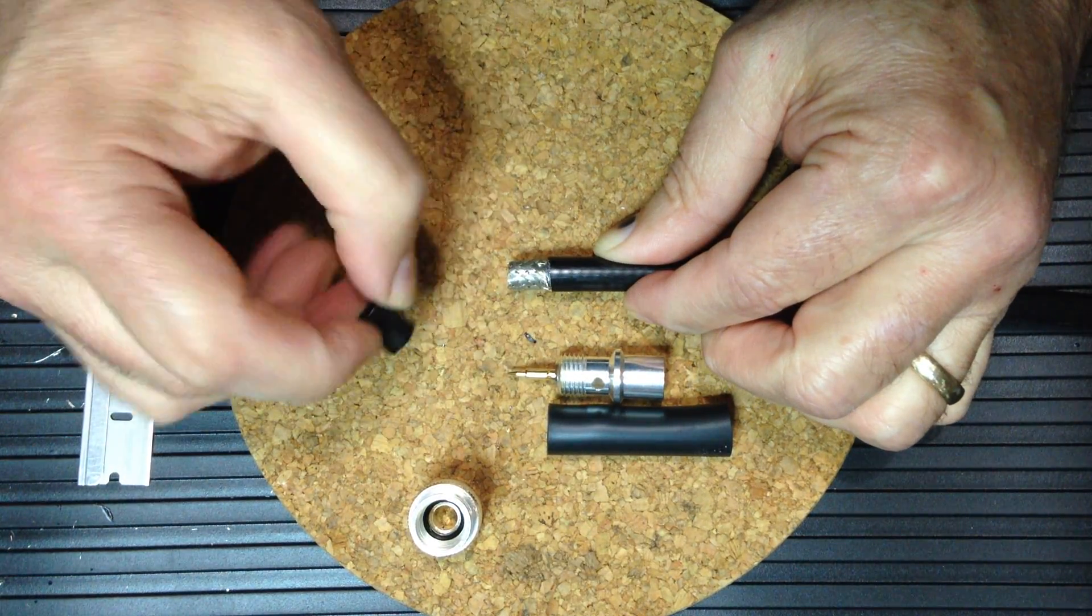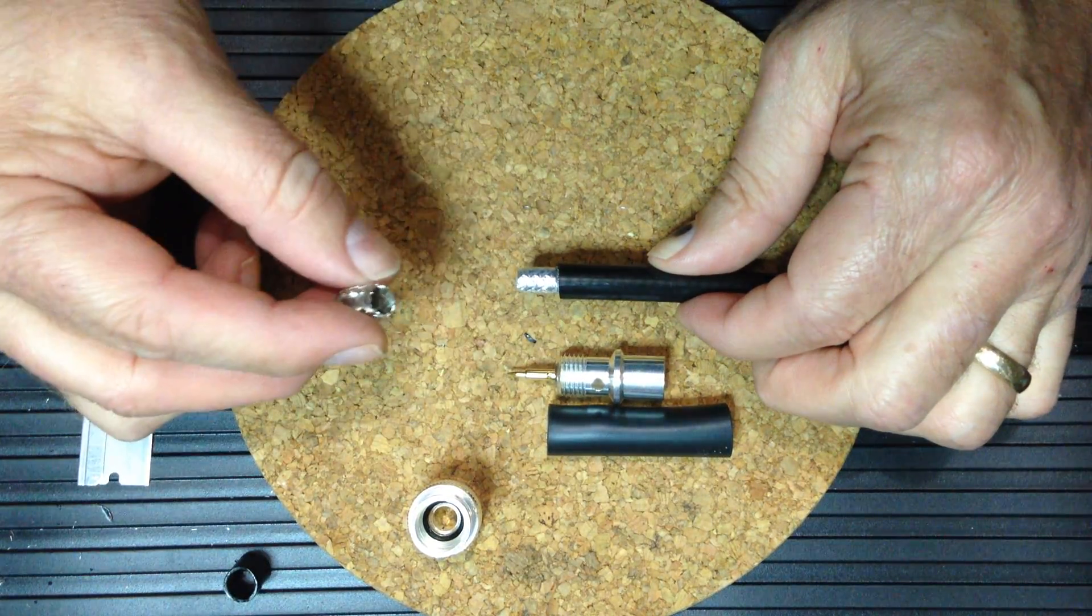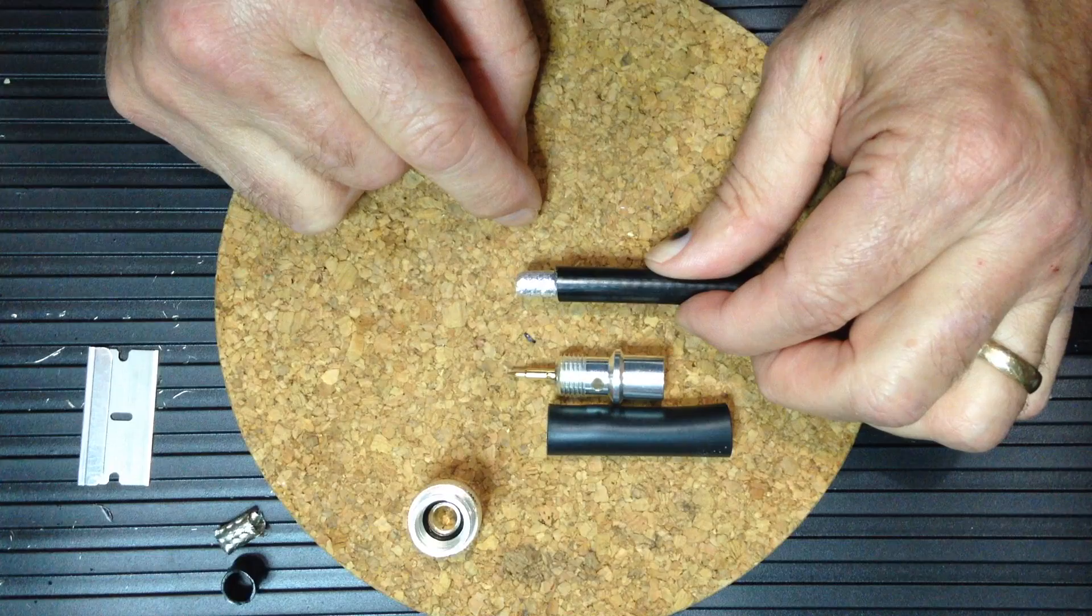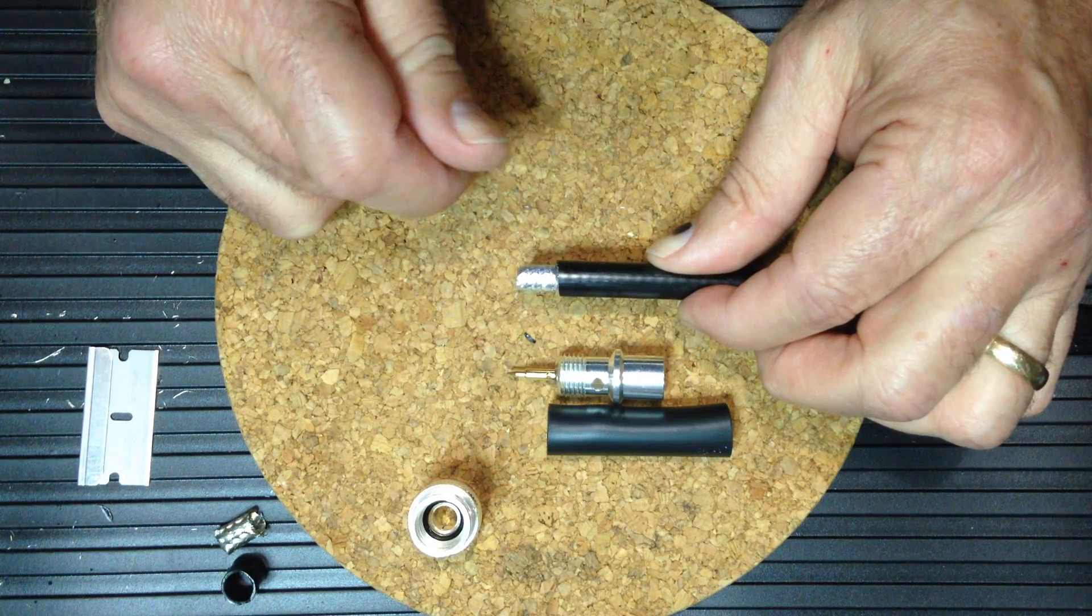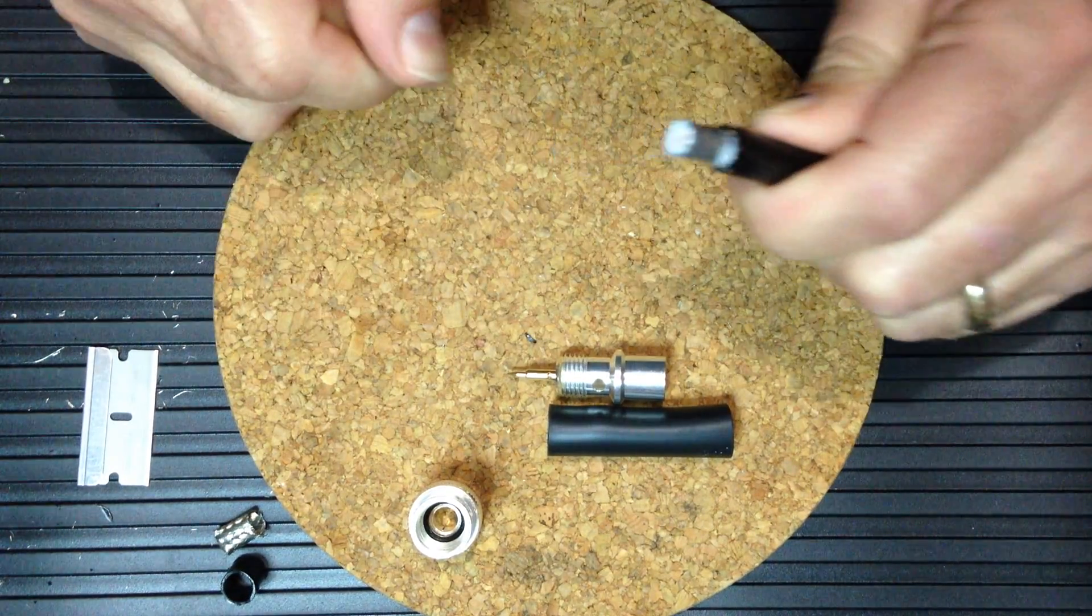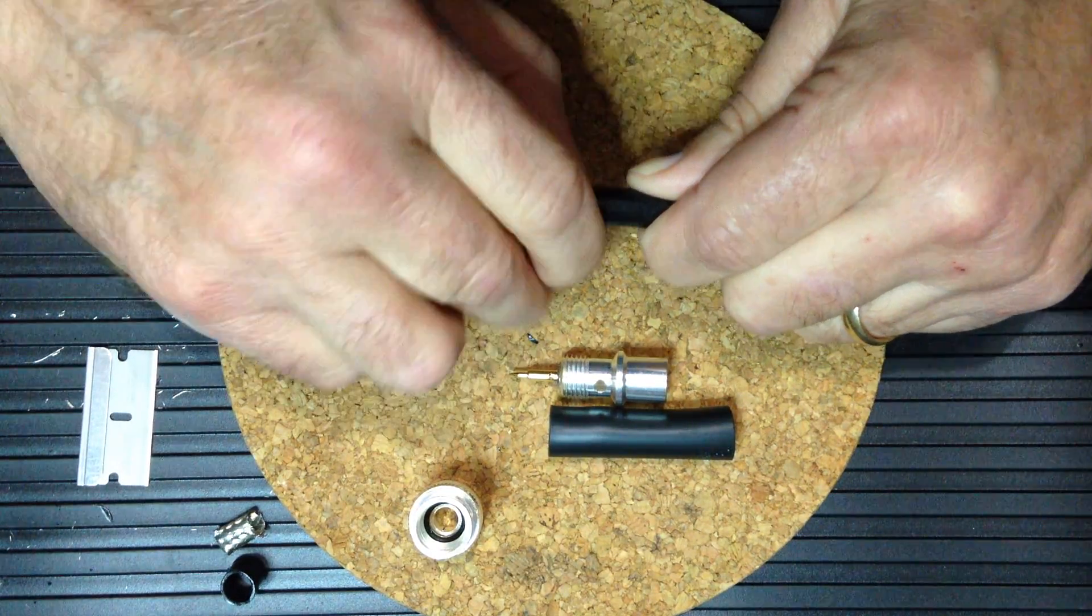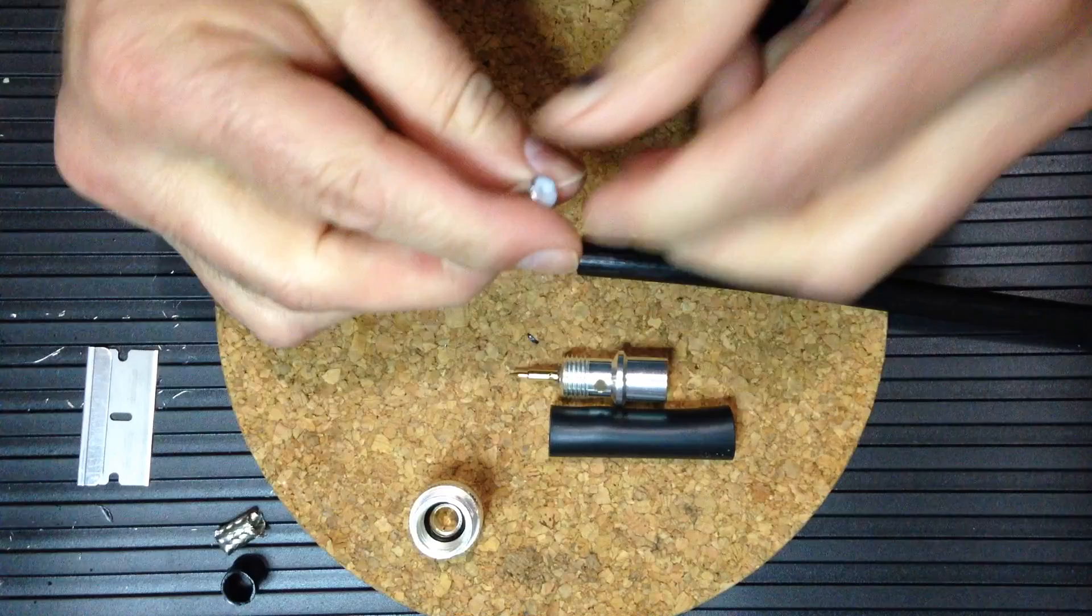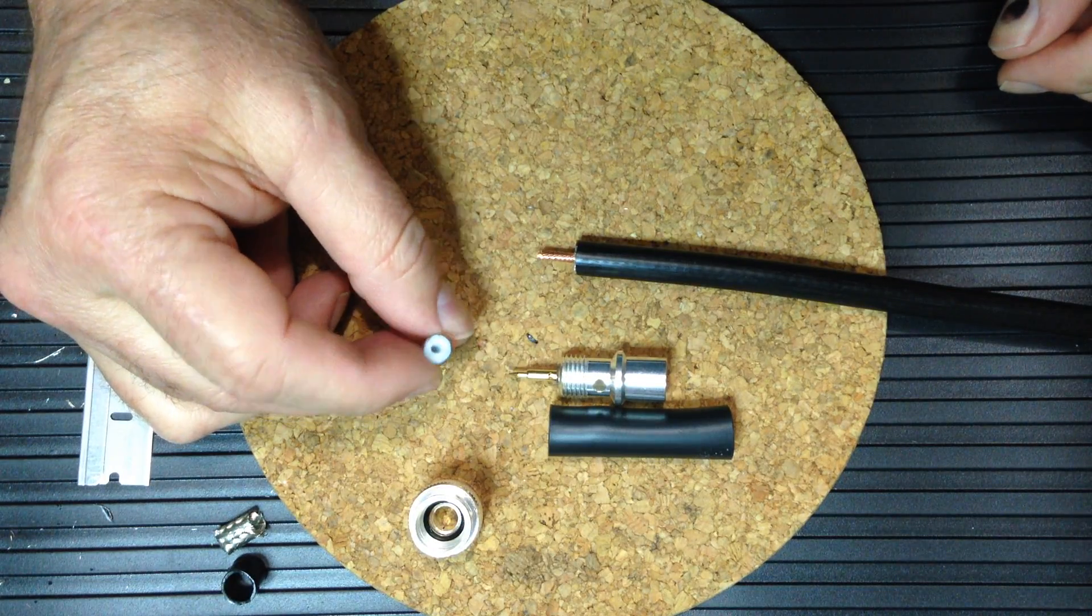We'll remove the jacket, which is a PVC type material, and the shield braid which is nice and tightly woven in LMR 400. LMR 400 also includes an additional foil shield over the dielectric. We'll remove that and the dielectric by putting our thumbnail into the cut and giving it a sharp clockwise twist, and then we can continue to rotate and pull to remove the dielectric from the center conductor. This is foamed polyethylene which has a relatively low melting point.